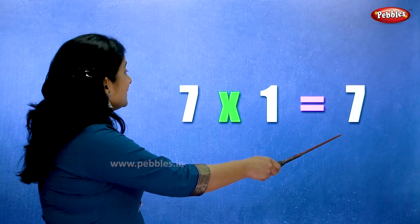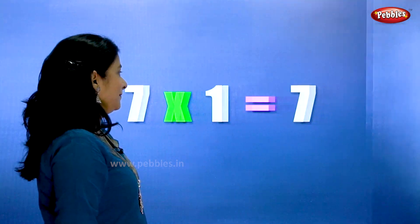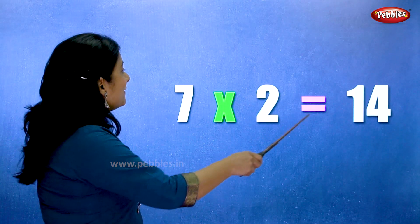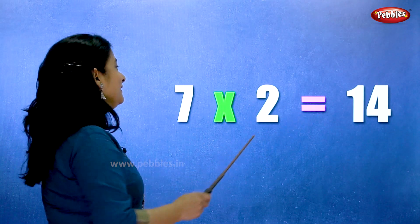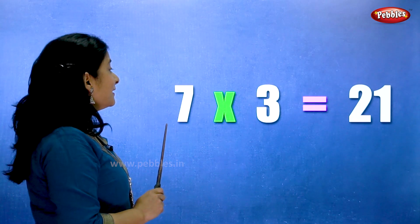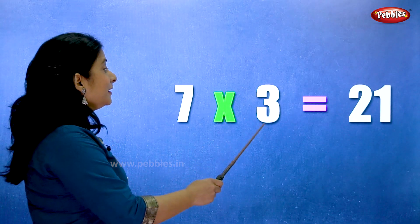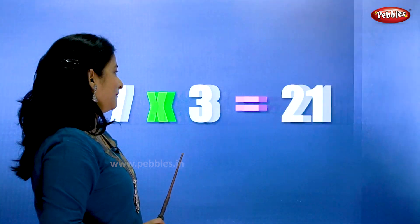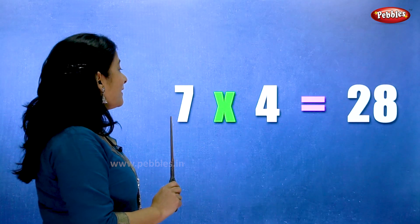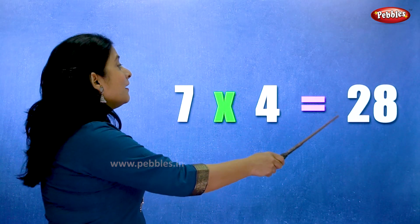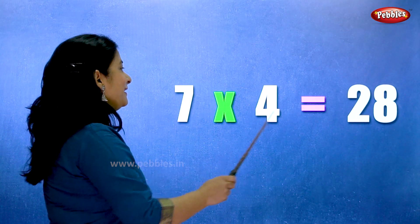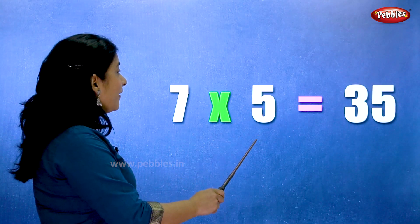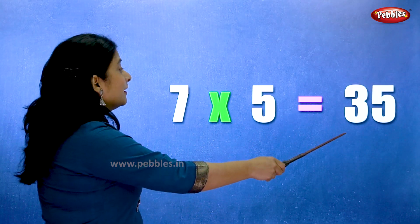7 ones are 7. 7 twos are 14. 7 threes are 21. 7 fours are 28. 7 fives are 35.